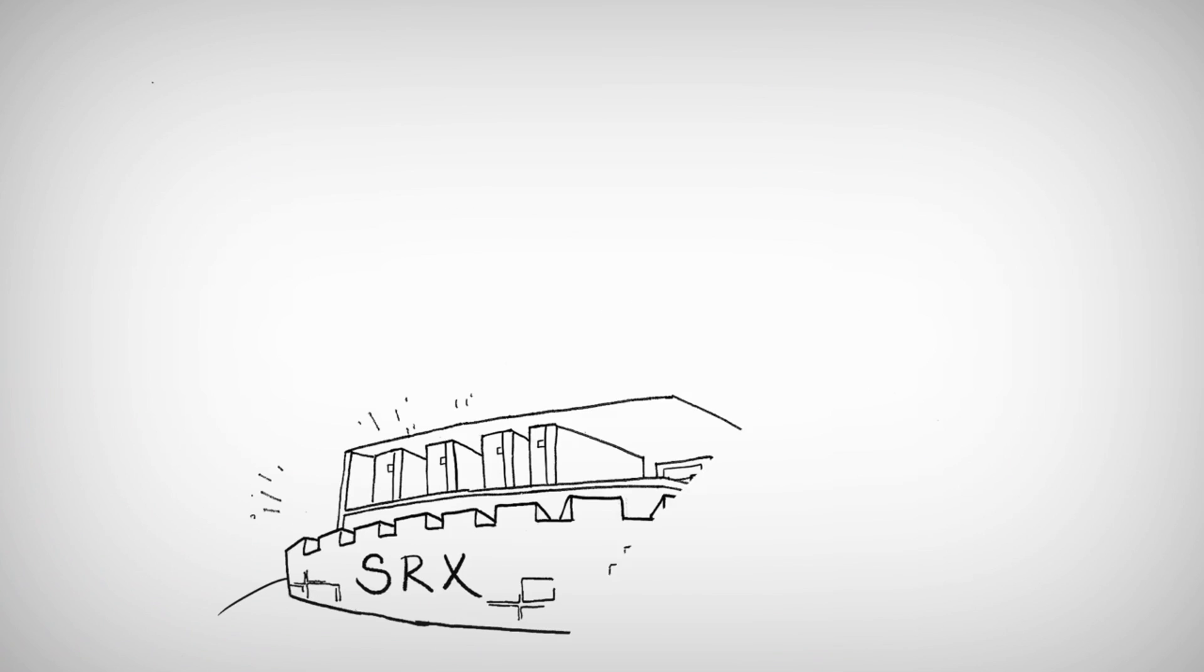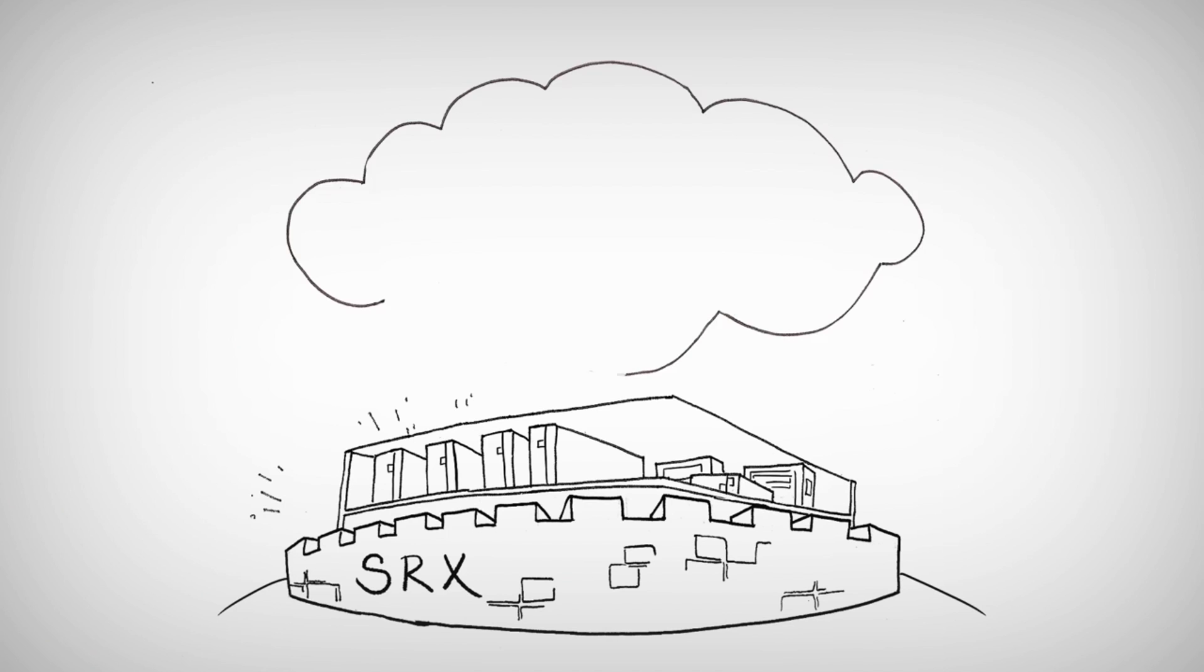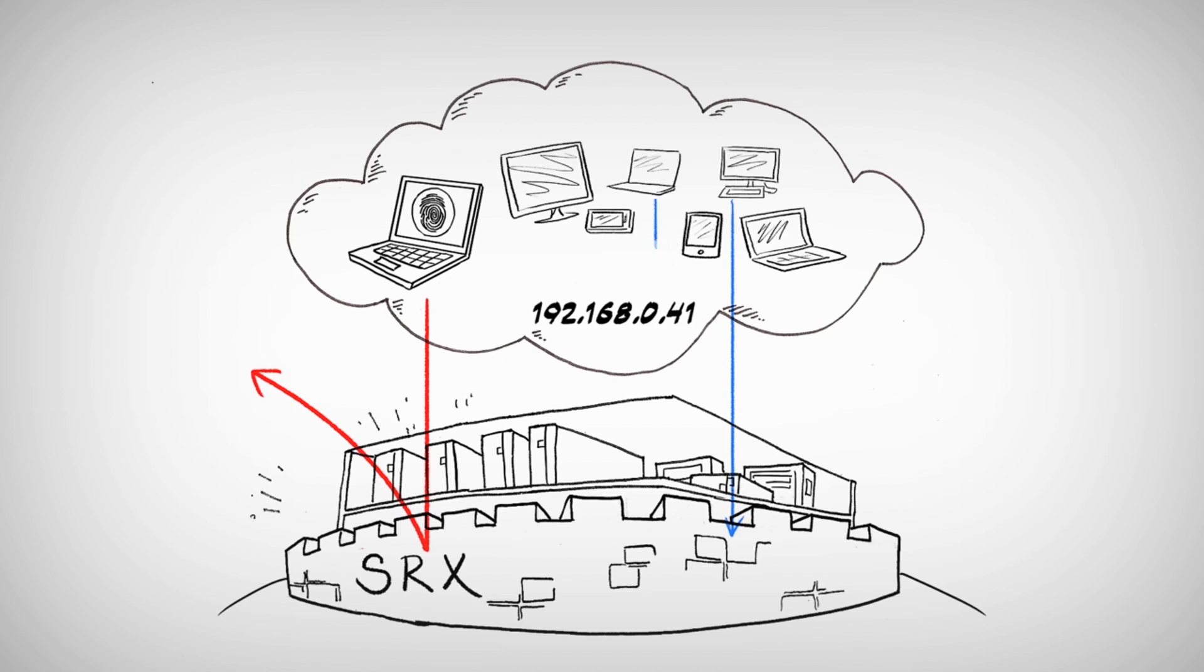Then we integrate that fingerprint into Juniper's SRX Series Firewall, the kind of high-performance firewall you want in your data center. This lets you very specifically block the bad guys from further action without blocking legitimate users, even if they're behind the same IP address.